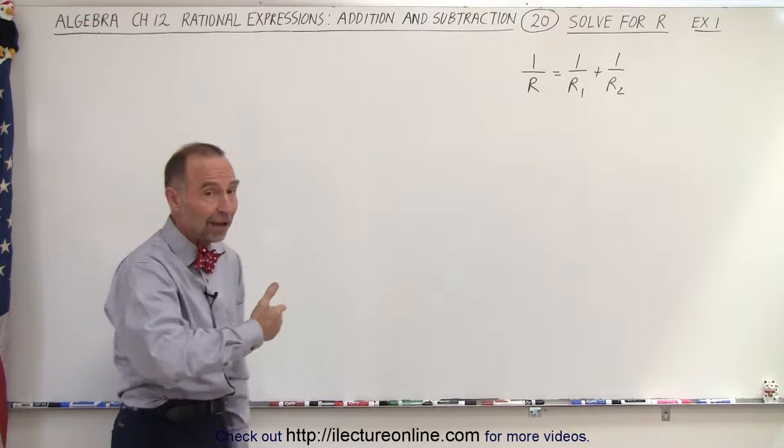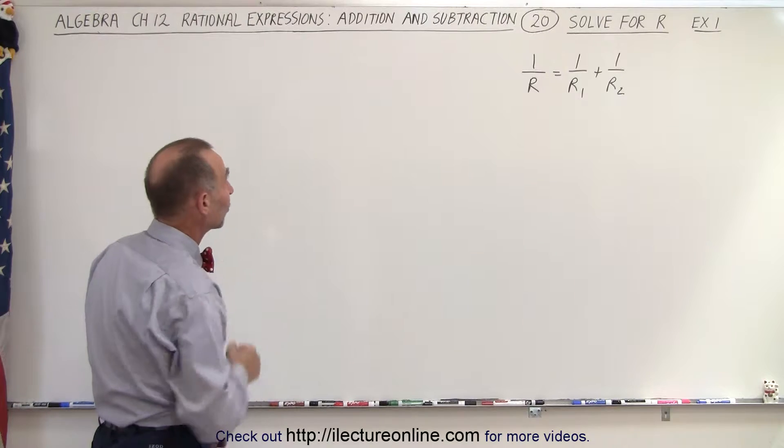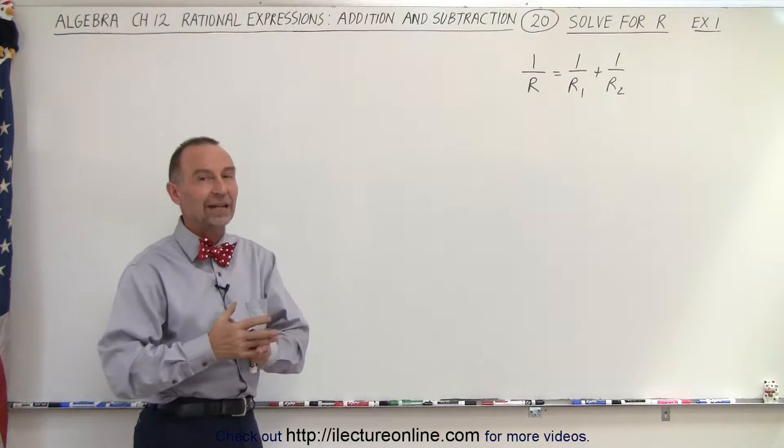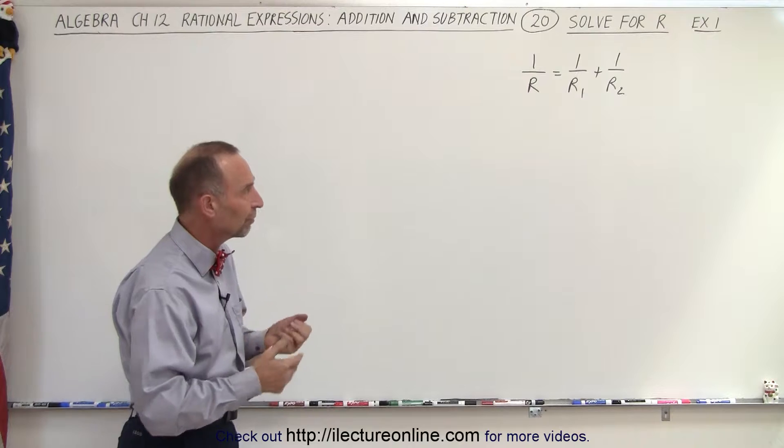Well, first of all, on the right side, we have what we would call two rational expressions. And in order to add those, we need to find the common denominator. So let's use that very same approach.